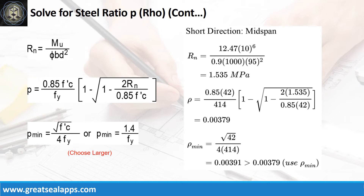Given short direction, mid-span moment is 12.47 kN·m; resistance factor equals 0.9; B equals 1,000 mm; and D equals 95 mm. The beam design ratio RN equals 1.535 MPa, and reinforcement ratio ρ equals 0.00379. Use ρ minimum of 0.00391.